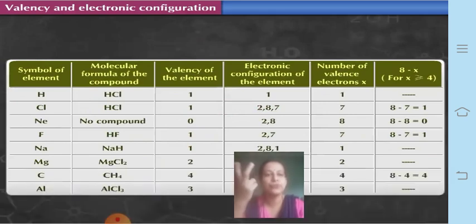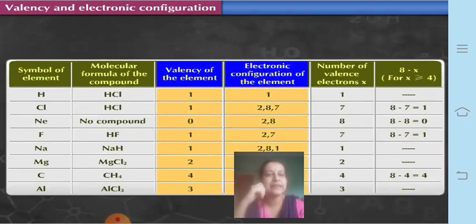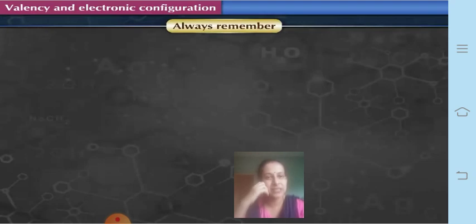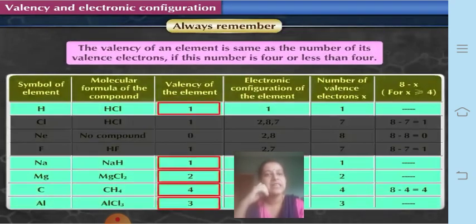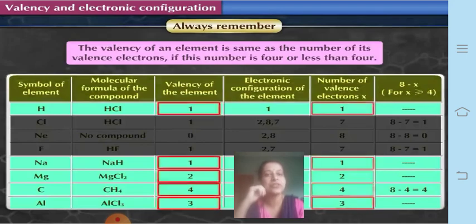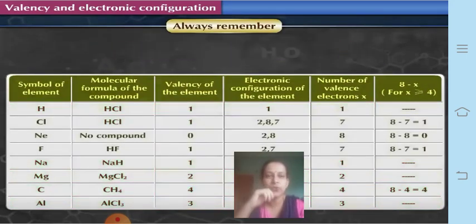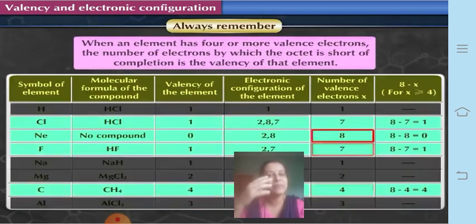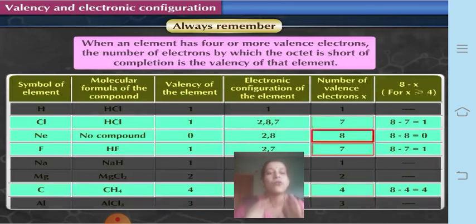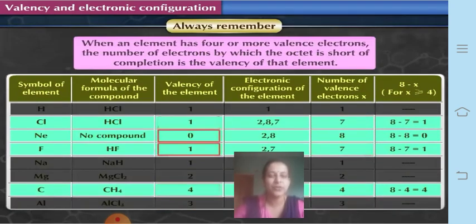In conclusion, two things: one, the valency of an element and electronic configuration are related to each other. Always remember — the valency of an element is the same as the number of valence electrons if that number is 4 or less than 4. Whereas when an element has 4 or more valence electrons, the number of electrons by which the octet is short of completion is the valency of that element.